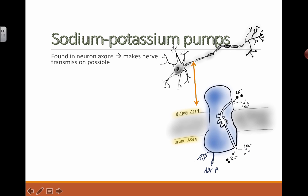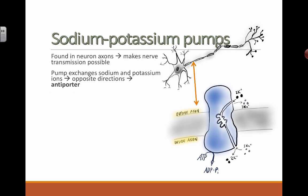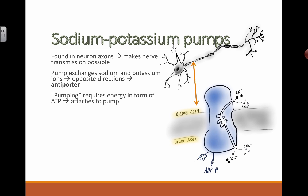For every two potassium ions, three sodium ions will get passed along. Another term used to describe this membrane pump is antiporter, which transmits these ions in opposite directions. It's a pump that requires some energy, and it moves these ions in opposite directions — they're traded — so that's called an antiporter.